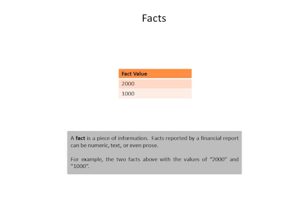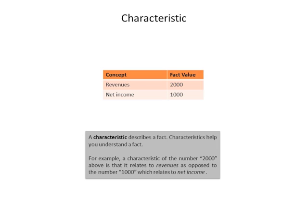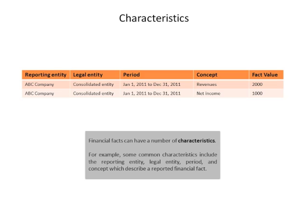To understand facts, you need to understand the characteristics of those facts. A characteristic basically describes a fact. For example, you can see that the fact value 2,000 relates to the concept of revenues, and the fact value 1,000 relates to the concept of net income. The facts of a financial report can have a number of characteristics — here we can see that the two facts have the characteristics of reporting entity, legal entity, period, and concept. Those characteristics describe the fact value.